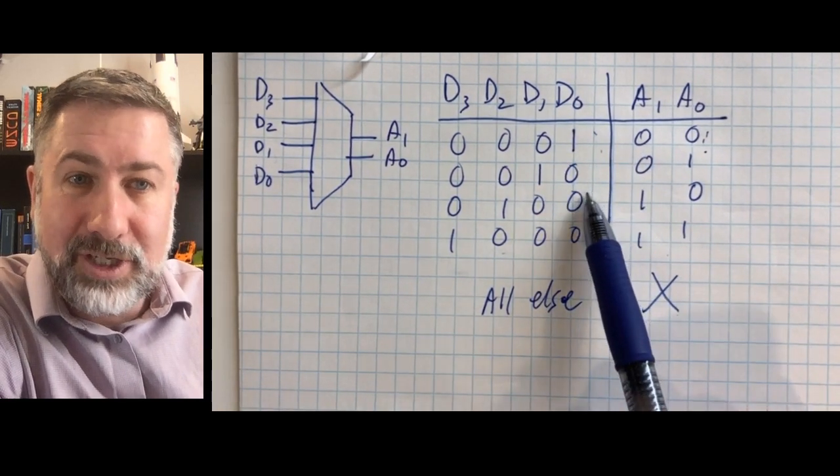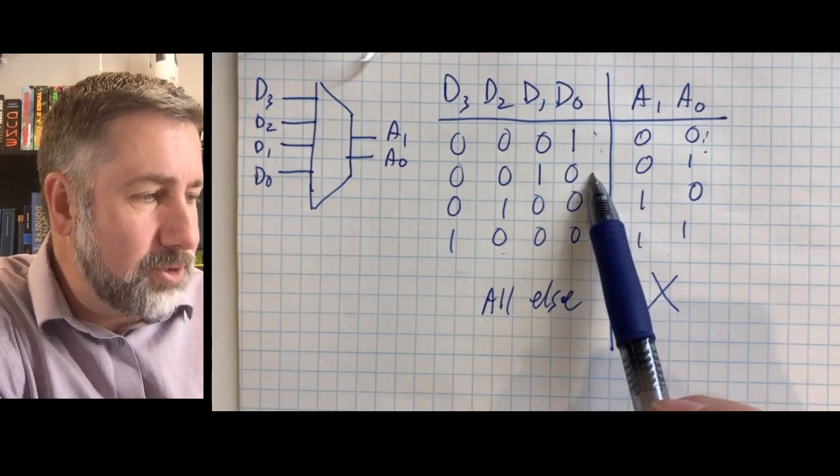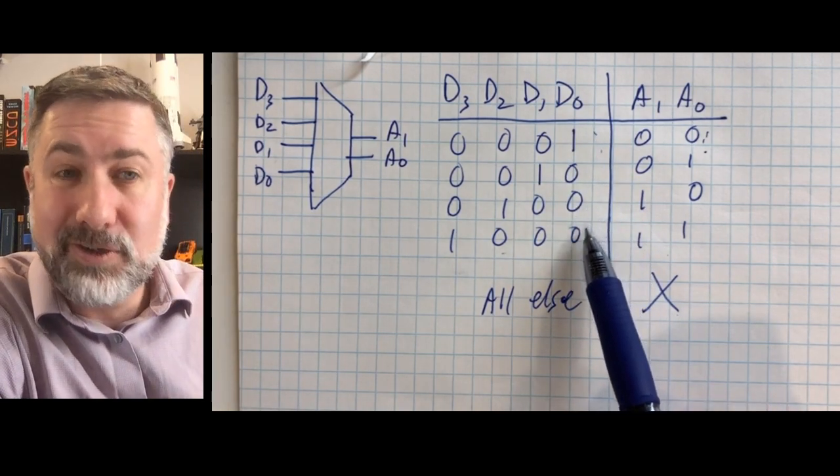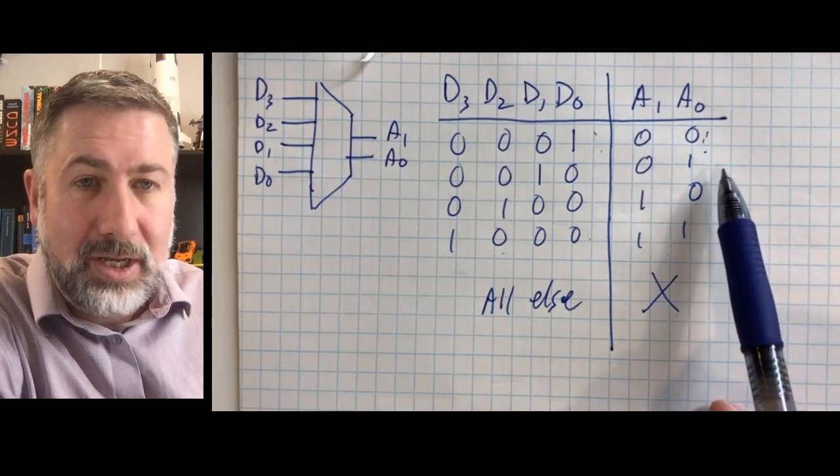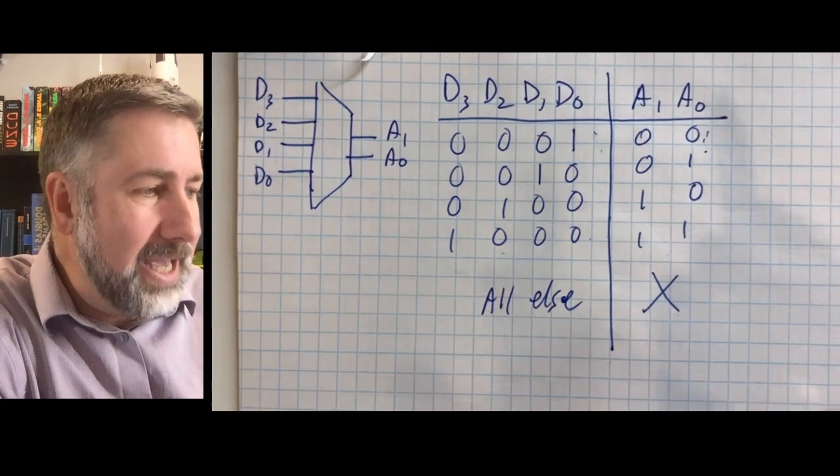These two are in the right order, but this one should be three further down. This is min term 1, min term 2, min term 4, and min term 8. So we can't look at this and say this is just D0 or something like that. You can't read it off of there.